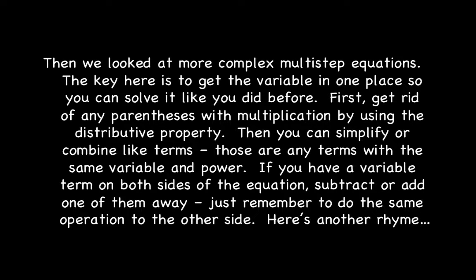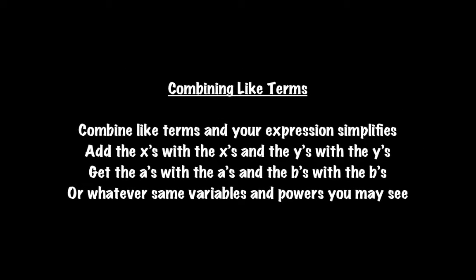Then we looked at more complex multi-step equations. The key is to get the variable in one place so you can solve it like before. First, get rid of any parentheses with multiplication by using the distributive property. Then you can simplify or combine like terms — those are any terms with the same variable and power. If you have a variable term on both sides of the equation, subtract or add one of them away, and remember to do the same operation to the other side. Combining like terms: add the x's with the x's and the y's with the y's, the a's with the a's and the b's with the b's — or whatever same variables and powers you may see.